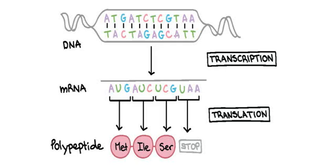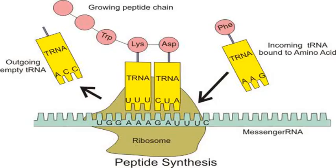Eukaryotic mRNA molecules often require extensive processing and transport, while prokaryotic mRNA molecules do not. A molecule of eukaryotic mRNA and the proteins surrounding it are together called a messenger RNP.